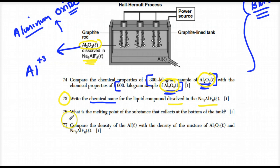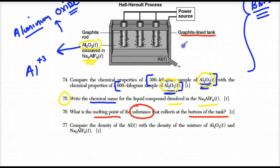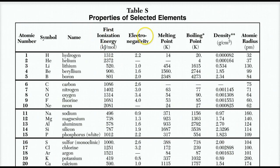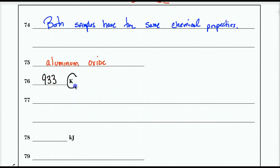Number 76: what is the melting point of the substance at the bottom of the tank? From the diagram, the substance at the bottom is aluminum. You don't know the melting point off the top of your head, so go to table S. Table S gives us the melting point of aluminum as 933 Kelvins. Write 933 K as your answer.